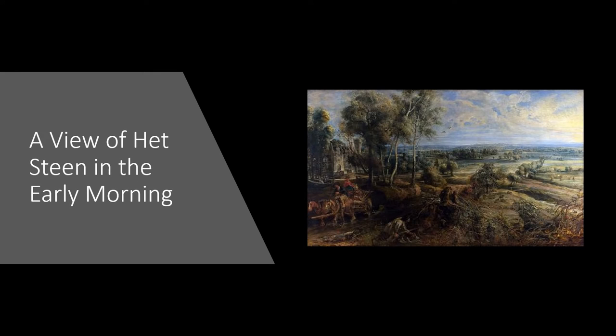The View of Het Steen in Early Morning: This painting was finished around 1636 and is displayed in the National Gallery. It depicts the landscapes around the artist's estate, Het Steen, near Antwerp.